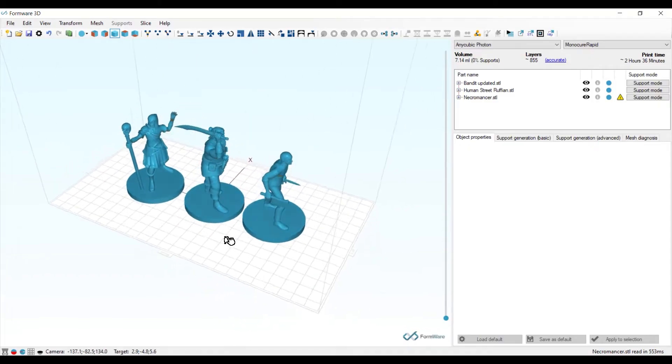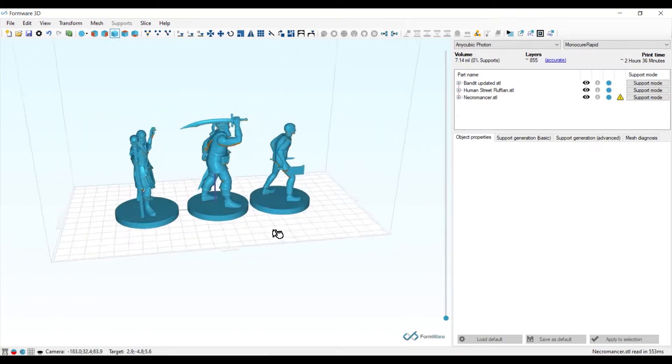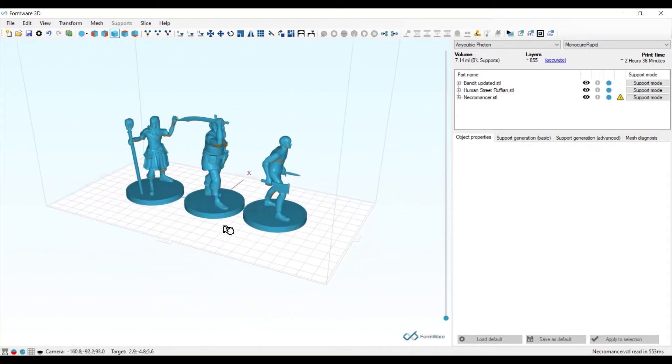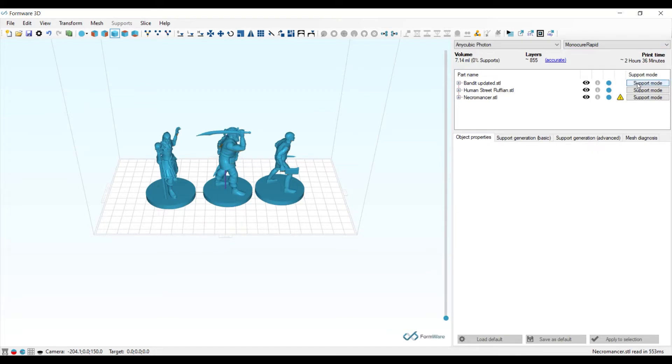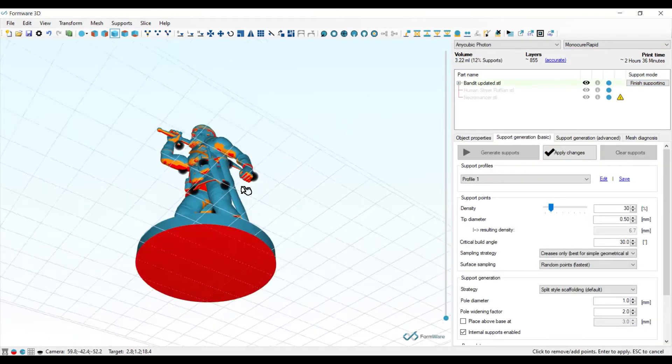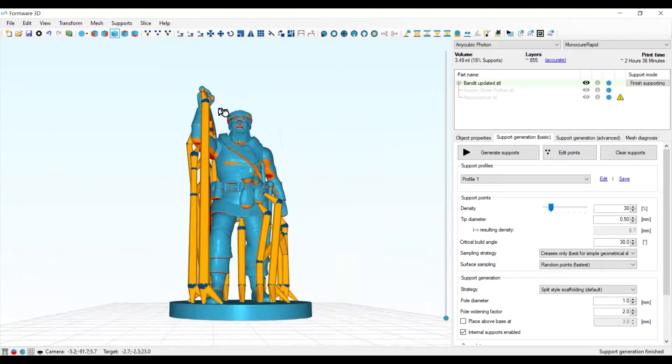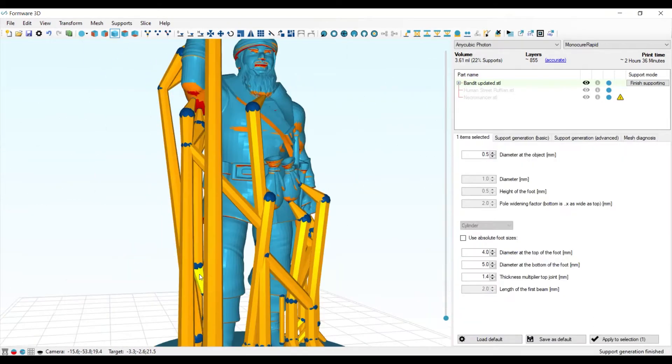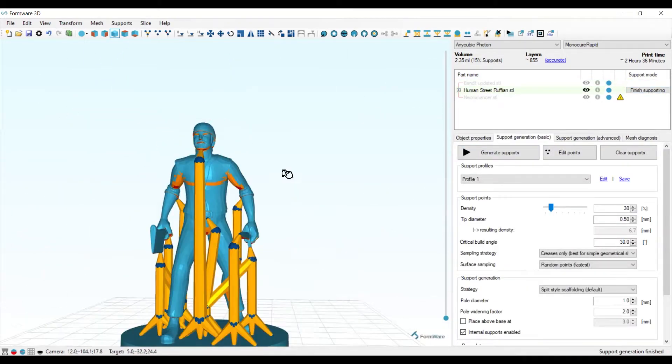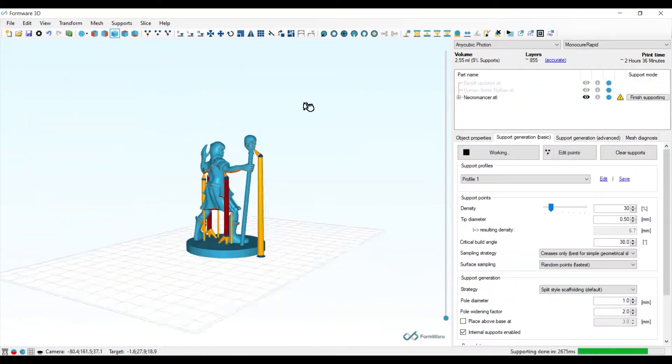I start by picking three models that look like they have some fairly breakable parts, and then I'm going to add supports to those. I really like this software, that I can choose where the supports are specifically and move them around, as opposed to just being stuck with whatever is generated from the software and not being able to move them or have them appear in the right places.